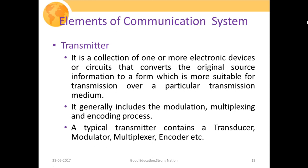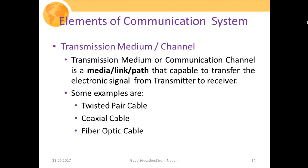A typical transmitter contains a transducer, modulator, multiplexer, encoder, etc. A transducer is a device used to convert a non-electrical quantity to an electrical quantity. In this subject we mainly discuss electronic communication systems. The transmission medium or communication channel is the physical medium, link, or path capable of transmitting the electronic signal from the transmitter to the receiver — it is basically the direct link between transmitter and receiver.